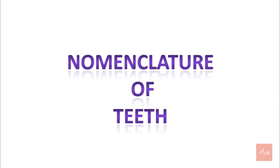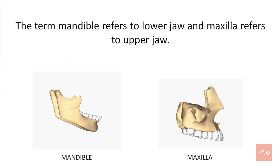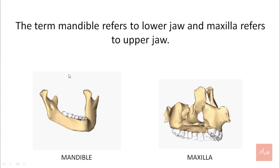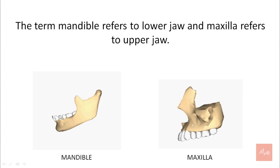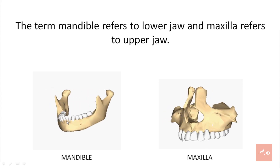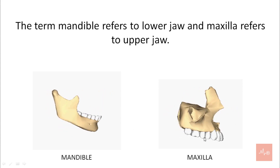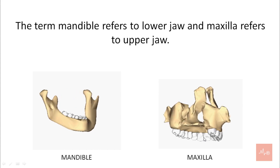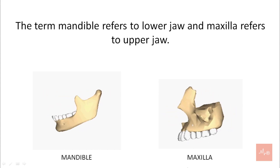The first step in understanding anatomy of tooth is to learn the nomenclature. Now what is mandible? Mandible is the lower jaw and contains mandibular teeth, and this is maxilla which refers to the upper jaw and contains maxillary teeth.